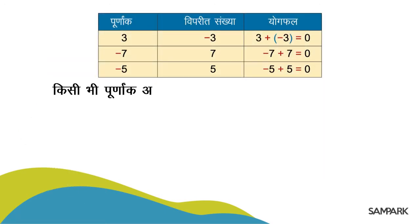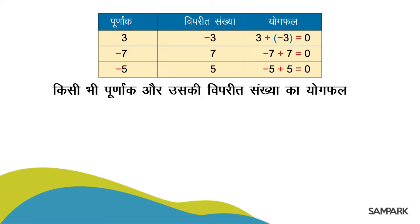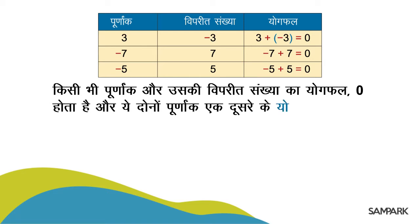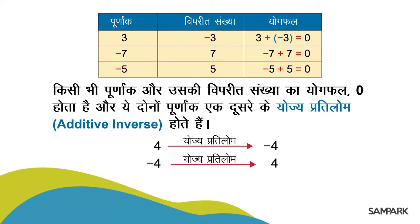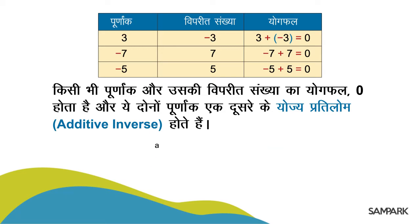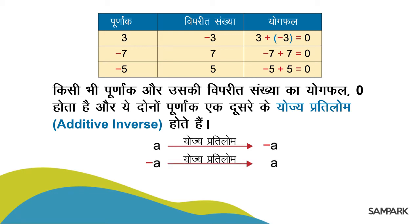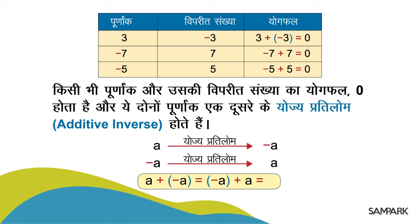देखा बच्चों, किसी भी पूनांक और उसकी विपरीत संख्या का योगफल 0 होता है। ये दोनों पूनांक एक दूसरे के योज्य प्रतिलोम यानी Additive Inverse होते हैं। जैसे 4 का योज्य प्रतिलोम हुआ माइनस 4 और माइनस 4 का योज्य प्रतिलोम हुआ प्लस 4। तो किसी पूनांक ए के लिए योज्य प्रतिलोम हुआ माइनस ए, और ए प्लस माइनस ए = 0।